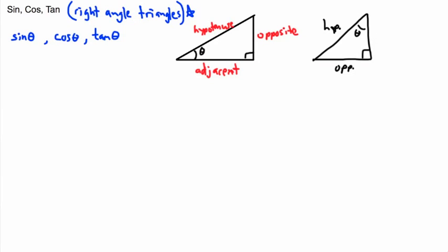Now here's a trick for remembering how to figure these out — because what if you have some sides and want an angle, or have a side and an angle and want another side? We have nice tricks using the trigonometric functions: sine, cosine, and tangent.